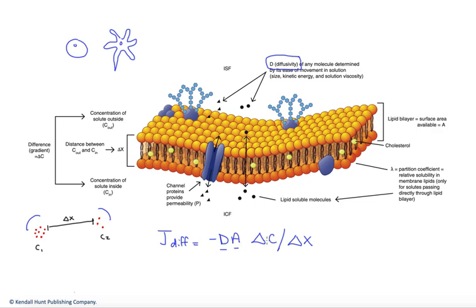Now, note that the first three terms, D, A, and delta c, are on top of this equation here. Only delta x is under a fraction here. And that means that D, A, and delta c are directly proportional to the diffusion rate. In other words, when D, A, or delta c go up, so does diffusion, and vice versa. Delta x, on the other hand, is inversely proportional. And as distance rises, that means that the diffusion rate would actually fall. And that makes a lot of sense, right? Diffusion would take a lot longer to occur over a much larger distance.